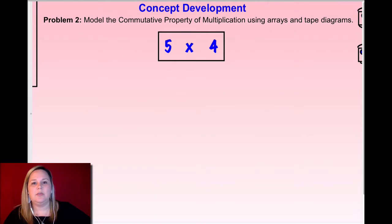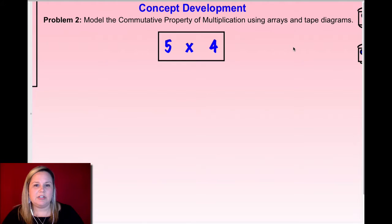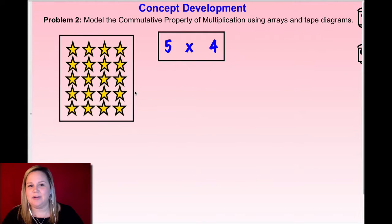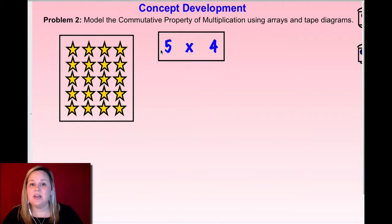Let's jump in with this one. We're going to do this one together and you can do the next one on your own. We're going to talk about this example of five times four. I want to draw an array that matches that — I have five groups: one, two, three, four, five, and there's four in each group: one, two, three, four. So that matches my array, and my array and my equation match.